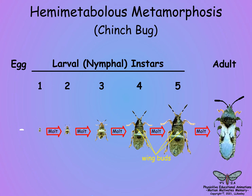Hemimetabolous insect species generally have five larval instars, or nymphs, that resemble adults except for small wing buds that enlarge at each molt along with developing flight muscles. At the adult molt, the wings become full size and the genitals form.